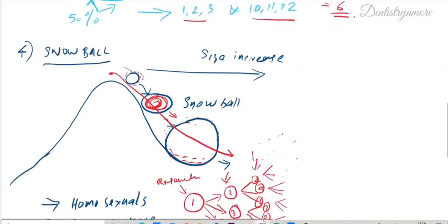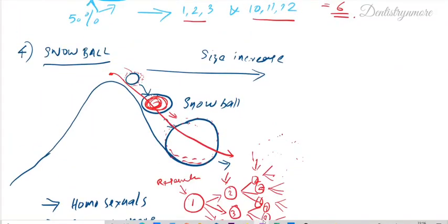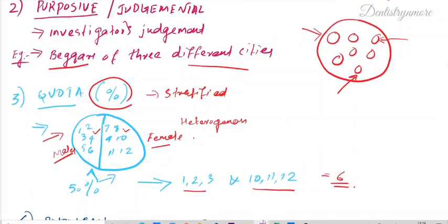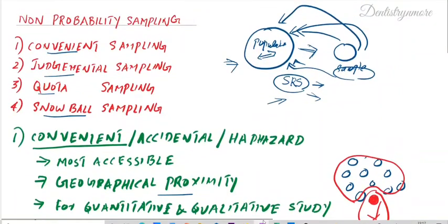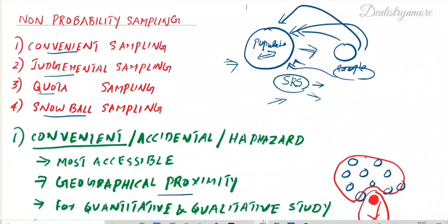So we discussed snowball sampling, quota sampling, convenient sampling, and purposeful or judgmental sampling. That was all about non-probability sampling. It is a weaker sampling compared to probability sampling, but in most cases we may have no other option but to choose non-probability sampling. Hope you understood this concept. I'll come up with another topic in dentistry and more — thank you.